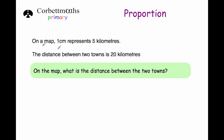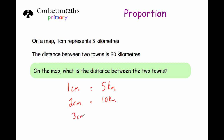Our next question: on a map, one centimetre represents five kilometres, and the distance between two towns is 20 kilometres. What is the distance on the map? We know one centimetre equals five kilometres. Continuing the pattern: two centimetres equals 10 kilometres, three centimetres equals 15 kilometres, and four centimetres equals 20 kilometres.